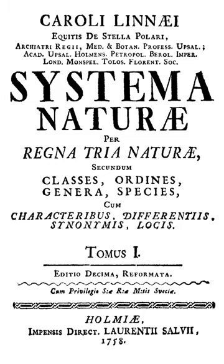In 1766–1768, Linnaeus published the much-enhanced twelfth edition, the last under his authorship. Another enhanced work in the same style, also titled Systema naturae, was published by Johann Friedrich Gmelin between 1788 and 1793. Since at least the early 1900s, zoologists commonly recognised this as the last edition belonging to this series. It was also officially regarded by the ICZN in Opinion 296 as the thirteenth edition of Systema naturae.